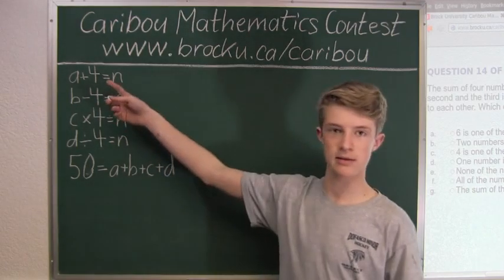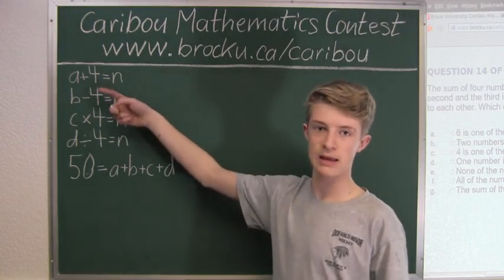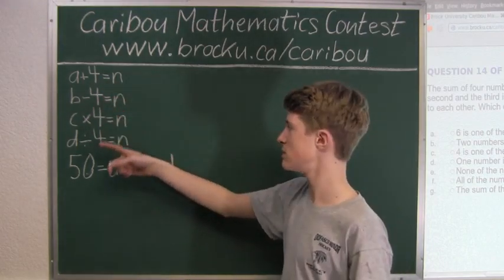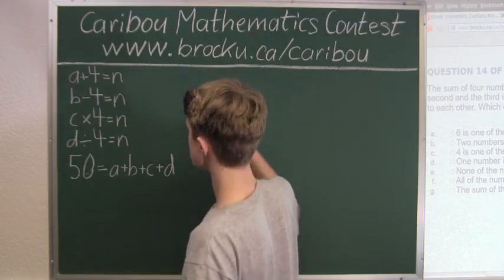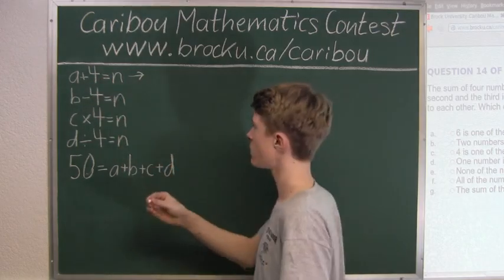Now we can rewrite these equations to have them as A equals, B equals, C equals, and D equals. So this would be the same as A equals N minus four.